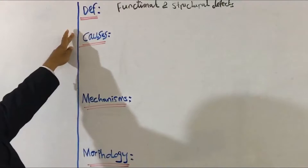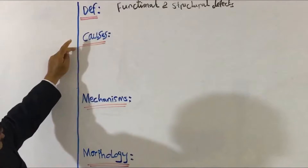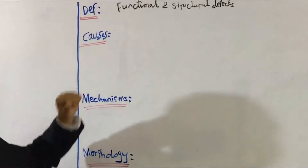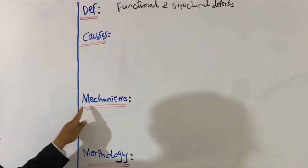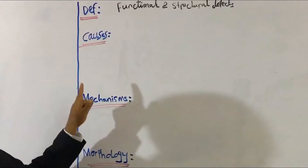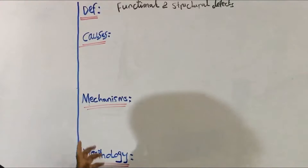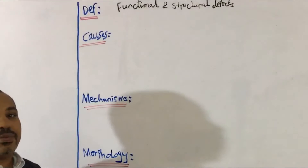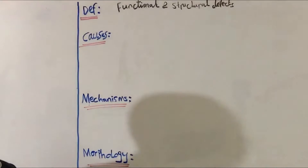The first point is the definition of cell injury. Number two, what are the causes of cell injury? Number three, what are the mechanisms of cell injury? Number four, what are the morphological changes which take place within the cell due to cell injury?